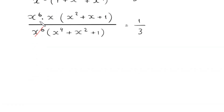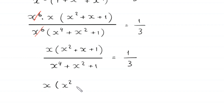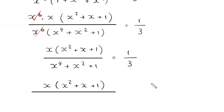Now this x to the power 6 will be cancelled out with this x to the power 6, leaving x times x squared plus x plus 1 divided by — now we want to write the expression in the denominator as a perfect square by using the algebraic identity a squared plus 2ab plus b squared is equal to a plus b, whole squared.